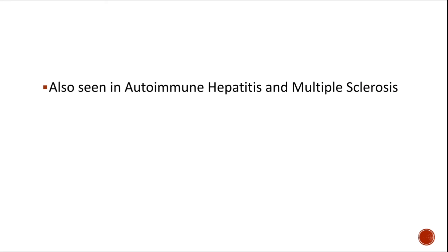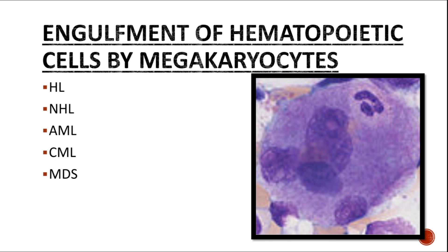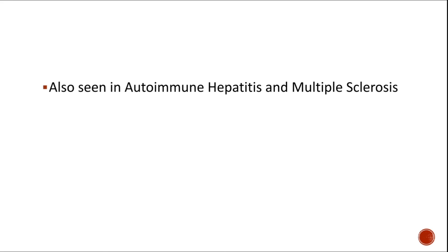Emperipolysis has also been observed in autoimmune hepatitis and multiple sclerosis. To summarize, emperipolysis means engulfment of one cell by another cell where the engulfed cell remains viable, morphologically and physiologically normal, and is not destroyed. It is seen in Rosai-Dorfman disease, certain myeloid leukemias, myelodysplastic syndrome, Hodgkin and non-Hodgkin lymphomas, and sometimes in autoimmune hepatitis and multiple sclerosis.